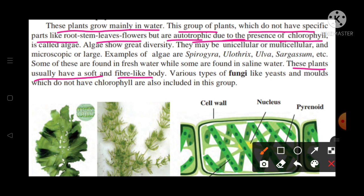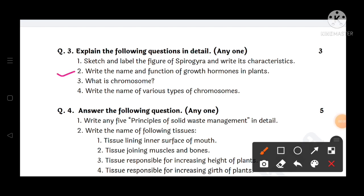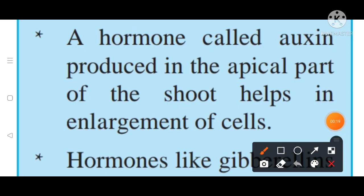Next question: Write the name and function of growth hormones in plants. The first growth hormone is auxin. The function of auxin is that it is produced in the apical part of the shoot and helps in the enlargement of cells.